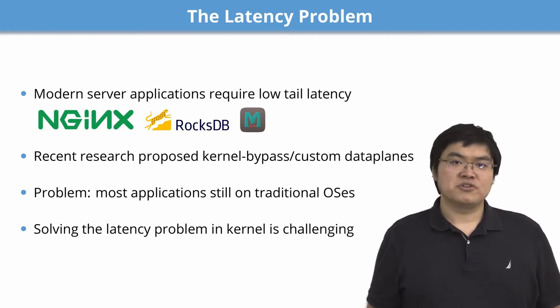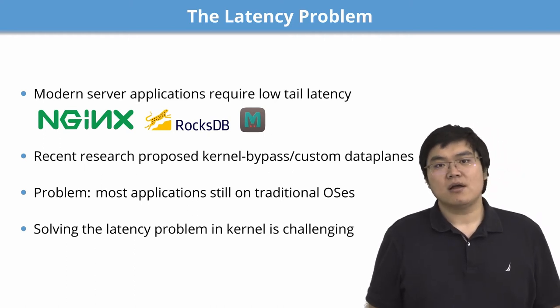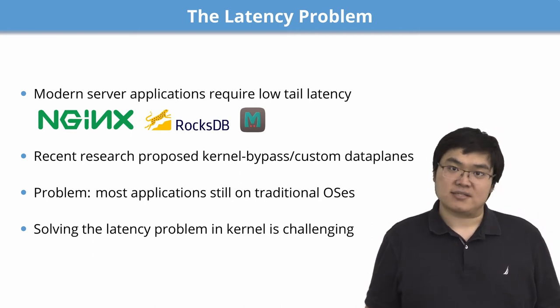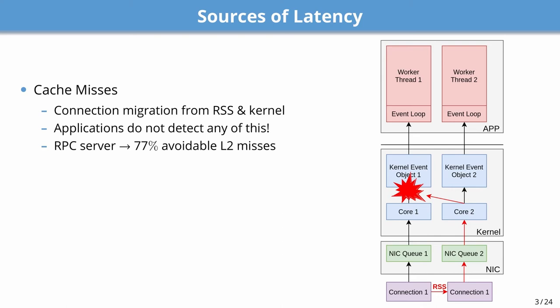However, most modern server applications are still built on top of traditional OSs. Solving the latency problem in a traditional OS kernel is hard, as we have to carefully trade off the benefit of our system with the overhead to the rest of the OS. We benchmarked multiple server applications such as memcached, and we've identified two sources of latency. The first source is cache misses, which come from connection migration from RSS and the kernel. When RSS migrates a connection to a different core, the kernel processes that connection on a new core, whereas the application still processes that connection on the old core, leading to cache misses. Applications do not detect any of this as the information is not available in user space.